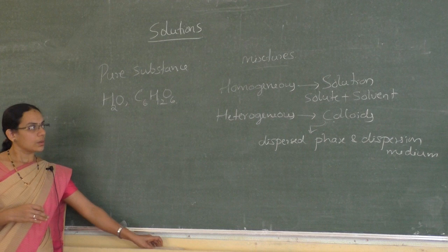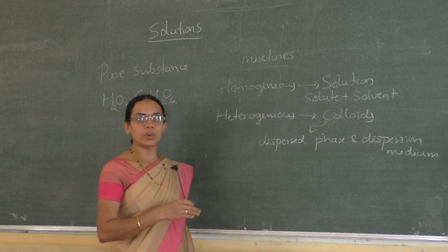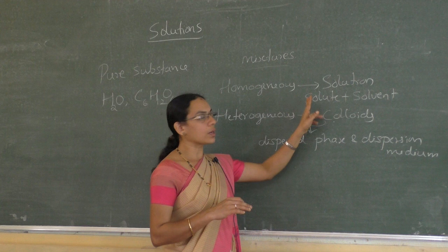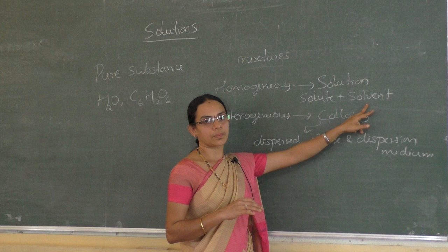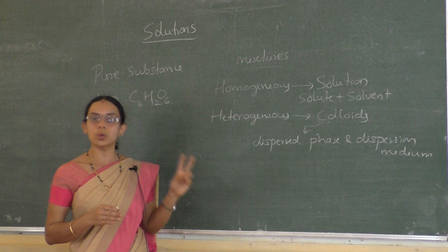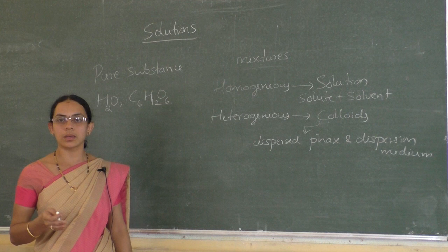In a solution we have solute and solvent. The component present in smaller quantity is called solute, and the component present in a larger quantity is called solvent. In this chapter, we are going to study only binary mixtures — solutions containing only two components. While solving problems, we take solvent as the first component (component 1) and solute as the second component (component 2).